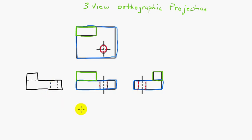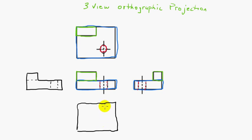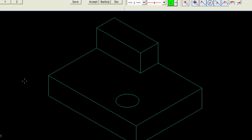If we had a reason to draw a bottom view, we could do that as well, and a bottom view would look like this. The hole will be here and the protuberance would be shown in hidden lines because you can't see that from the bottom — you can only see it from the top. I'm going to jump into our CAD system where we've modeled up this block.